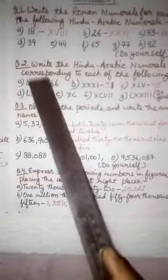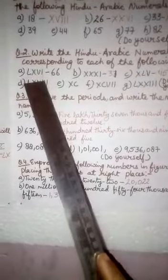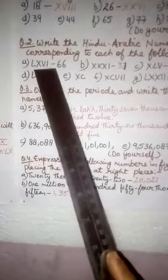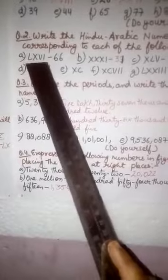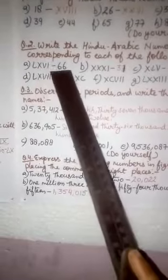Question number 2. Write the Hindu Arabic numerals corresponding to each of the following. First is L, X, V and 1.